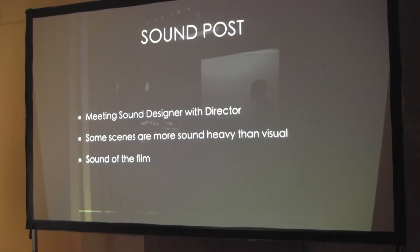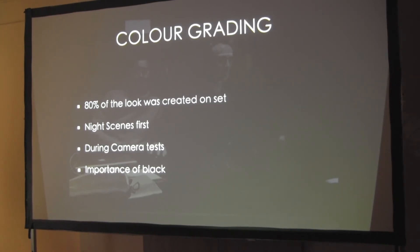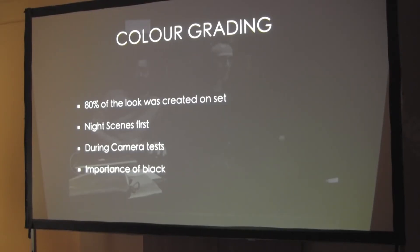The second part is very important: some scenes are more sound-heavy than visual. Sound can also create something, and in that case my color grading has to be slightly less — because filmmaking is collaboration, it's not only visual. I respect the sound as well. And as I mentioned, for me 80% of the look is already created on set. I create night scenes first when I start color grading, and according to the camera test results discussed with the color grader, we already know where to go — we just do what we have to do.